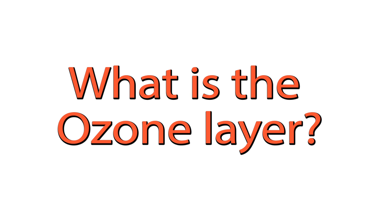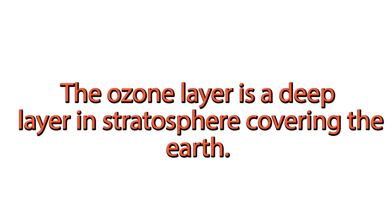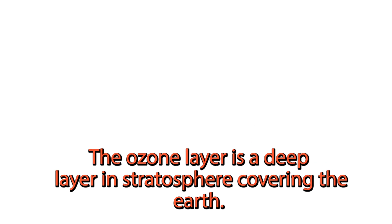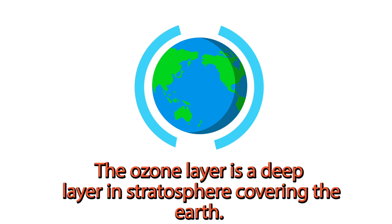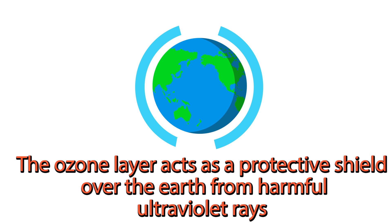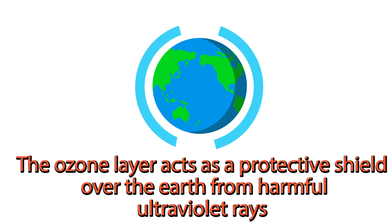What is the ozone layer? The ozone layer is a deep layer in the stratosphere covering the earth. The ozone layer acts as a protective shield over the earth from harmful ultraviolet rays.